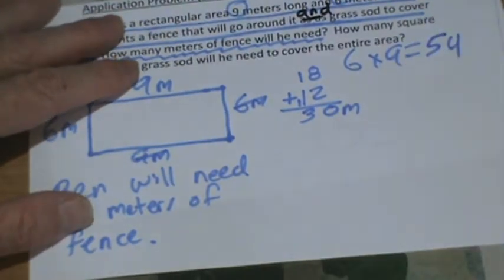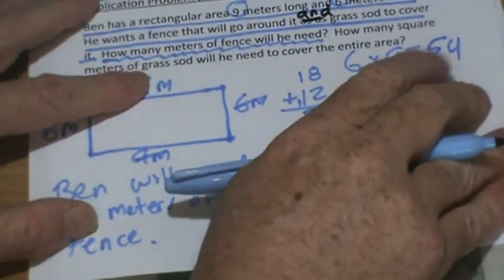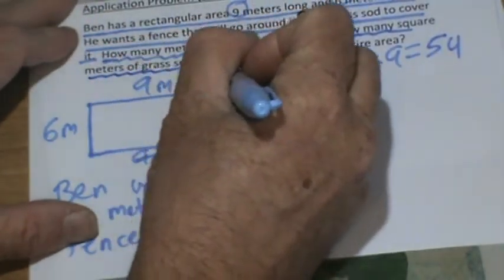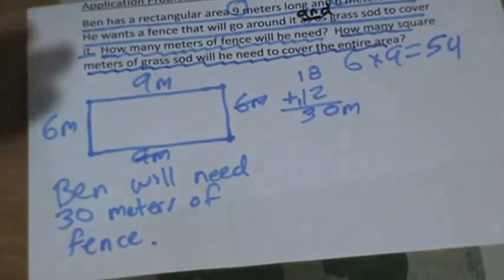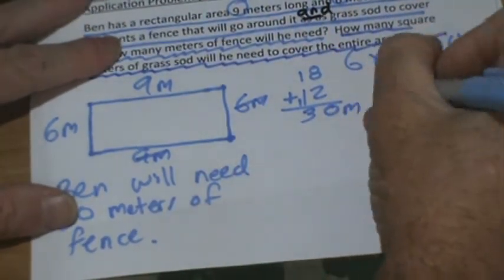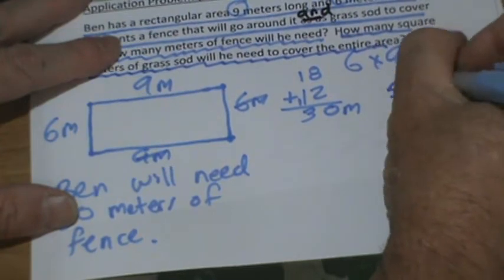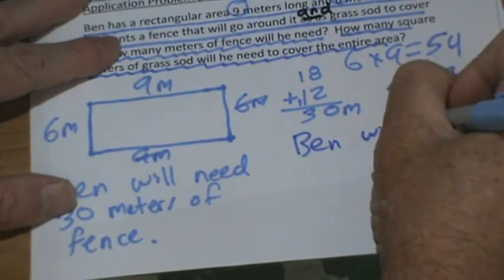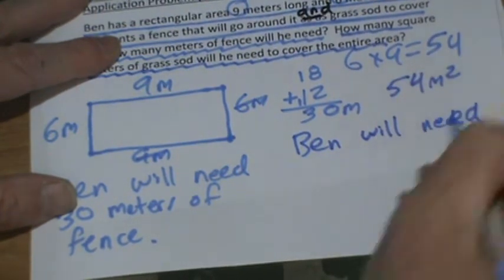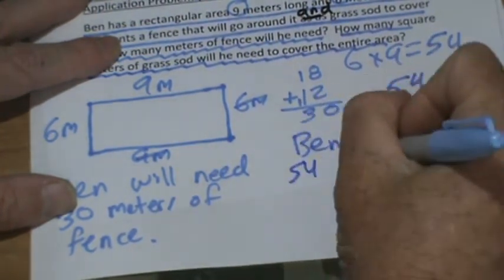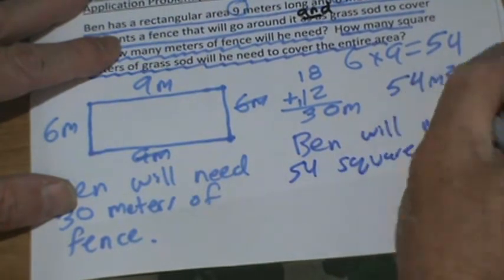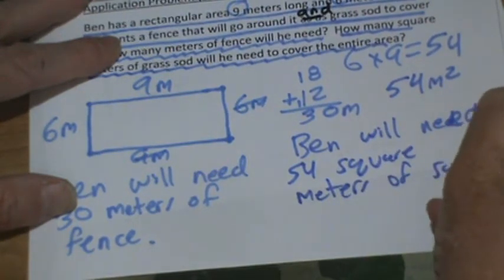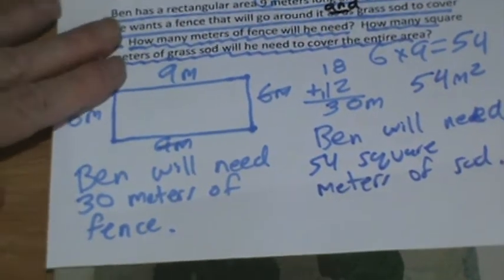Maybe we can watch a video about that. But he's going to need fifty-four — so we're trying to figure out how many square meters of grass sod will he need to cover the entire area. So it's square meters. He'll need 54 square meters — that's what that little two means — of sod.